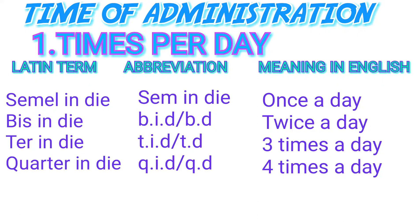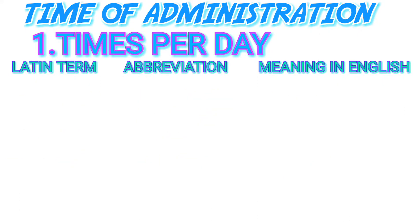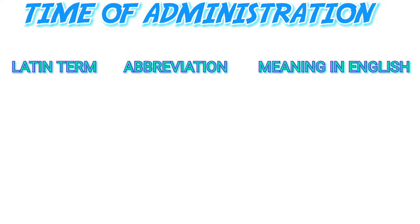Next is 'ter in die,' abbreviated TID or TD, meaning three times a day. Then 'quater in die,' abbreviated QID or QD, meaning four times a day. And so on. Now let us look at the different times of the day.